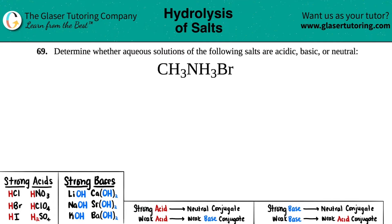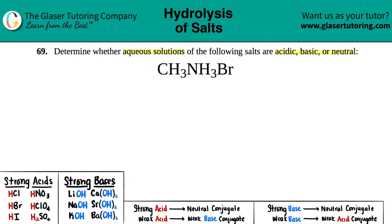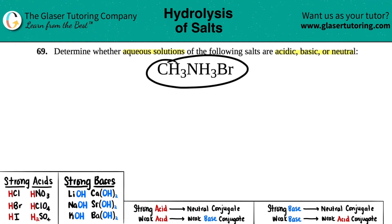Number 69: determine whether aqueous solutions of the following salts are acidic, basic, or neutral. We have the salt CH₃NH₃Br. This one's a little tricky because generally speaking, salts are ionic compounds and you'd expect to see a metal, but there's no metal here — carbon, hydrogen, nitrogen, and bromine are all non-metals, which means we should have a polyatomic ion.